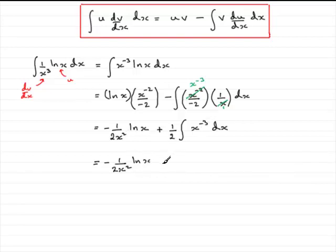Now, just need to integrate this term. So, we've got a half. In the usual way, add 1 to the power. So, you've got x to the power minus 2. Divide by the new power minus 2. And now, don't forget your constant of integration. Plus c.